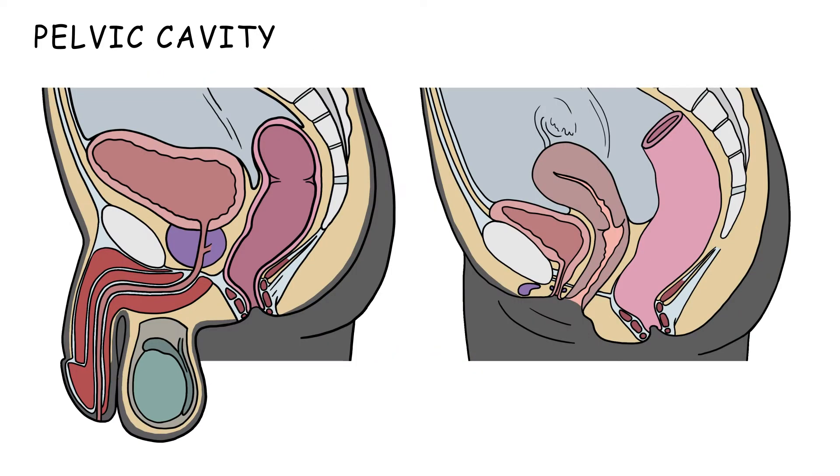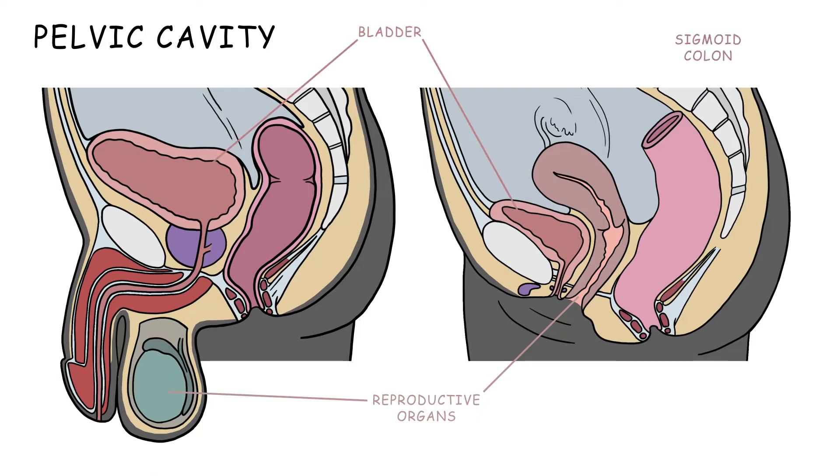The pelvic cavity contains the reproductive organs, bladder, sigmoid colon, and rectum.